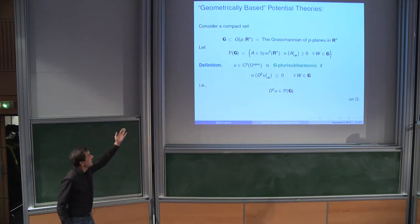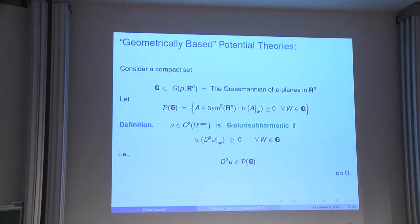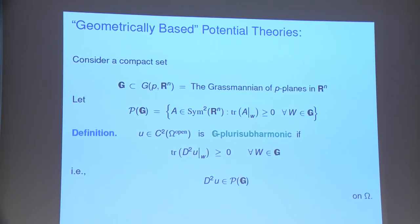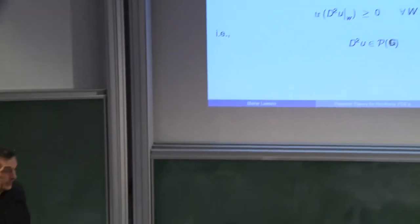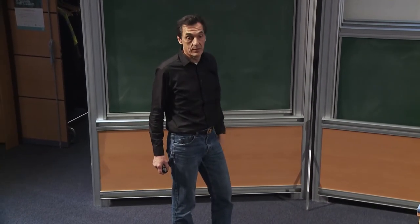You start with a compact set G of P-planes in R^n, and then you consider quadratic forms A whose restrictions on all these planes have a non-negative trace. That's a subset in the set of quadratic forms on R^n, denoted by P of G. Imagine you have C^2 smooth functions on some open subset of R^n. You want to say that it is plurisubharmonic with respect to that subset G if its second derivatives belong to the set P of G at every point. In other words, the trace of the restrictions of second derivatives to every P-plane W in G gives a non-negative trace.